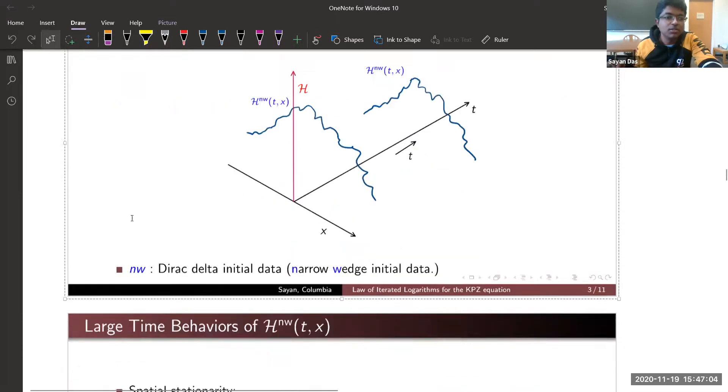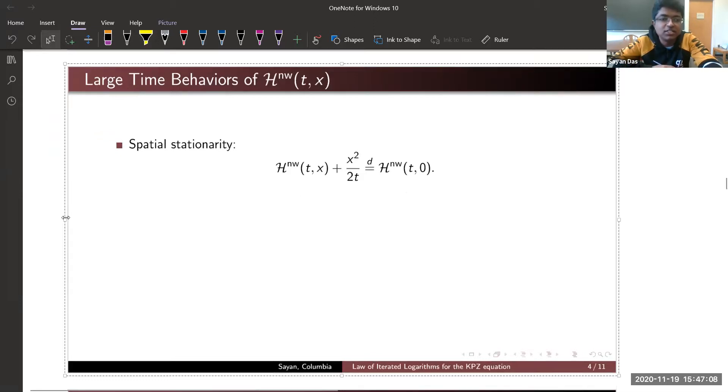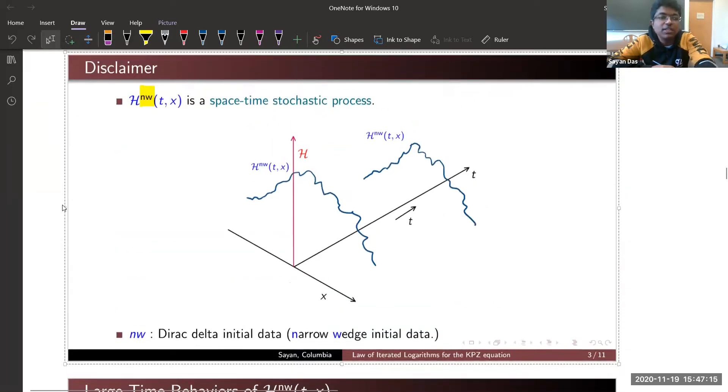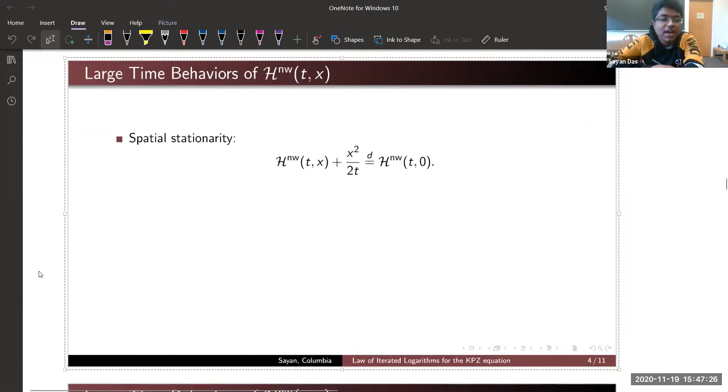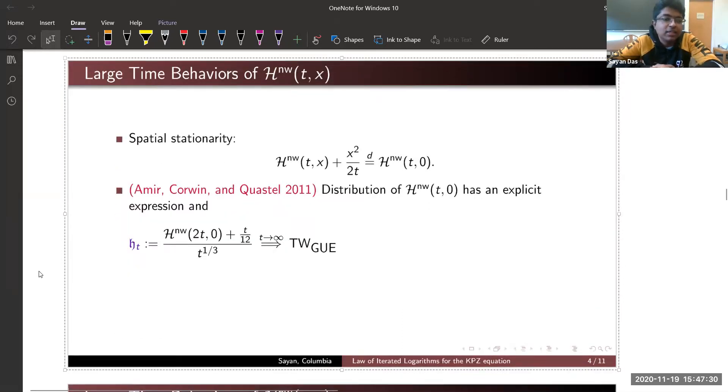We have something known as spatial stationarity—fixing a time t, if you add an appropriate parabola, it becomes stationary. Roughly speaking, on each time slice your process looks like an inverted parabola. It was proven a decade ago in a seminal paper by Amir, Corwin, and Quastel that the distribution of H(t,0) has a very explicit expression. If you take time t tends to infinity, it has Tracy-Widem-GUE fluctuations. This is Tracy-Widem-GUE distribution from random matrix theory, and this is the kind of scaling you need: add t over 12 and divide by t^{1/3}.